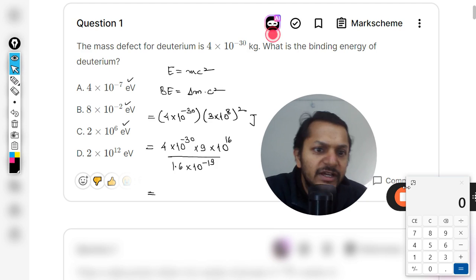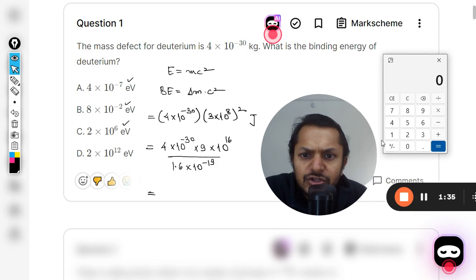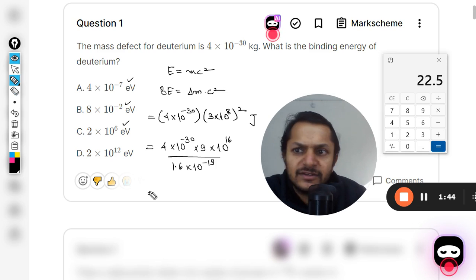And for this, let us substitute our values here. So 4 × 9 divided by 1.6, so I'm getting the answer as 22.5.